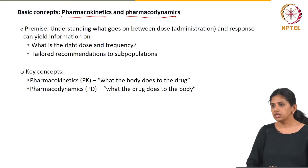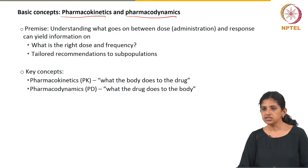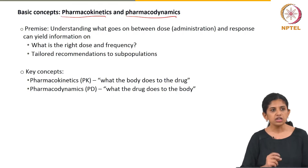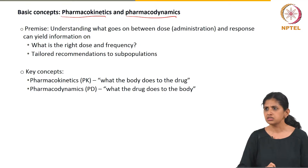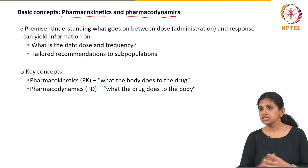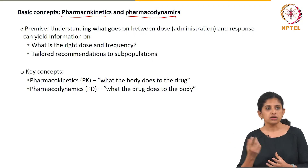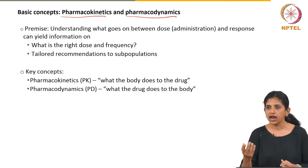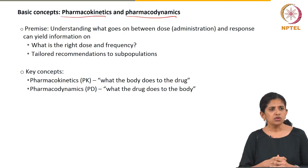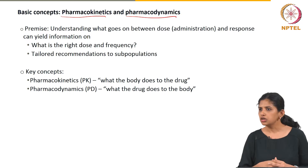A simple way to think about it is pharmacokinetics is what does the body do to the drug. So you pop a pain pill or someone injects insulin into themselves — what really happens? For instance, when you've had a Brufen or an Anacin at some point, you pop it in — what do you think happens to the pill?